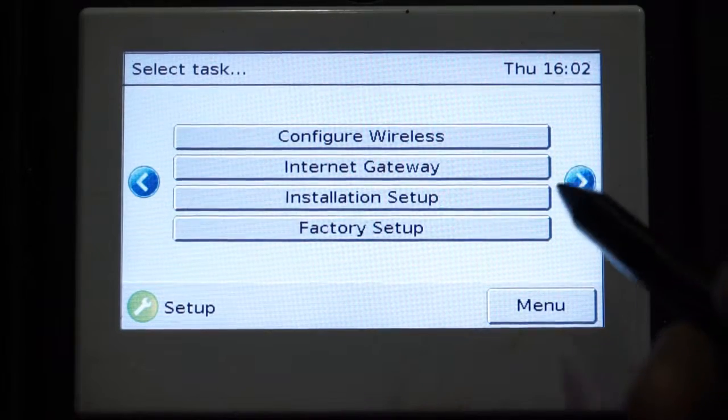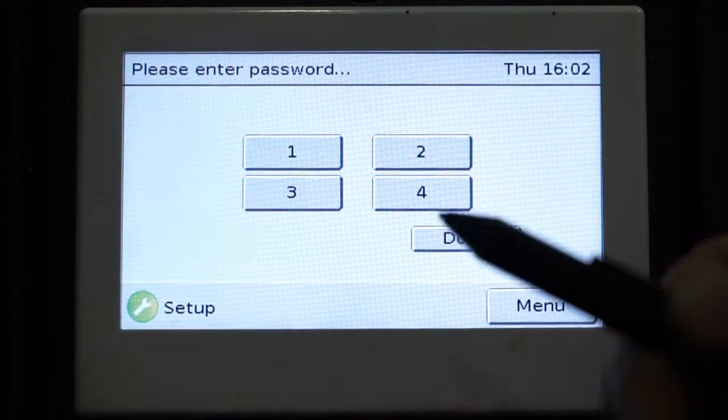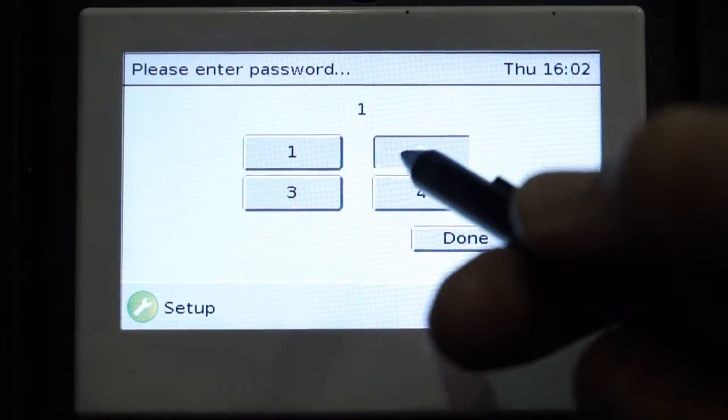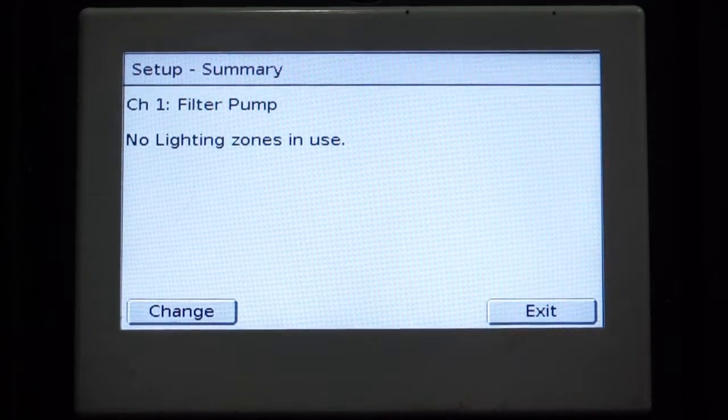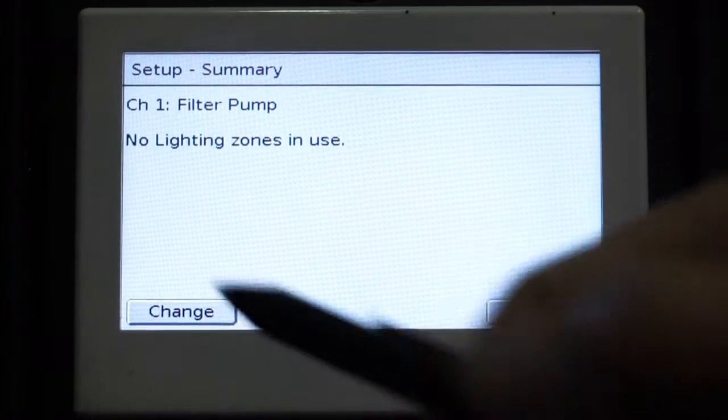Scroll over to Installation Setup. Passcode is always 1, 2, 3, 4. Hit Done. There we see our Setup Summary page. We will hit Change.